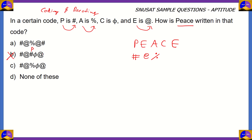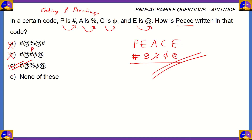Now we have two remaining options. We can either have at-hashtag or phi-at as one of the two correct answers, and if none of them are right, then the answer is none of these. Remember, the code for C is phi, so phi has to be our fourth letter. This means option A is also incorrect, and option C is the right answer. E is again represented by at, so hashtag, at-the-rate, percentage, phi, and at would code for PEACE. Option D — none of these — is therefore not the answer, because we do have a right answer in option C.